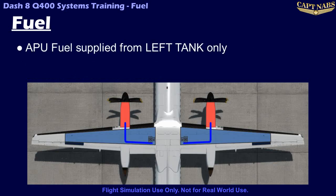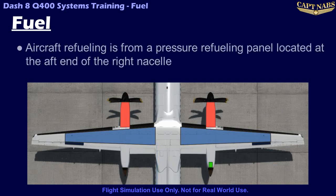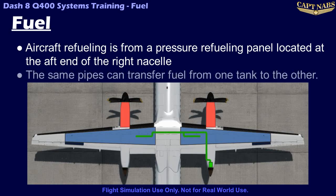The APU is also supplied with fuel from the left wing tank only. Fuel is normally supplied to both tanks through a single-point pressure refueling connection located on the aft end of the right engine nacelle. Fuel can also be transferred between the two wing tanks any time AC power is available, though there is no capability to directly cross-feed an engine from the opposite tank.